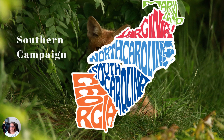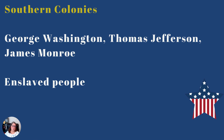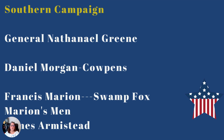Looking at the Southern campaign — coming from the Southern colonies we have George Washington, Thomas Jefferson, and James Monroe. A large number of enslaved people are involved: many joined up with the British Army because they were promised their freedom, while some joined the Continental Army or local militia. In the Southern campaign leading up to Yorktown, we see General Nathaniel Greene, Daniel Morgan at the Battle of Cowpens, and Francis Marion — the Swamp Fox — whose men harassed the British and gathered intelligence throughout South Carolina.